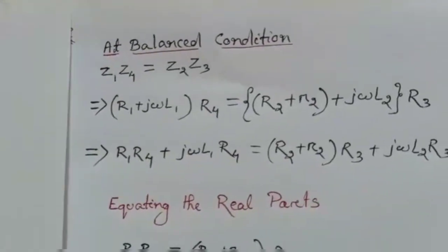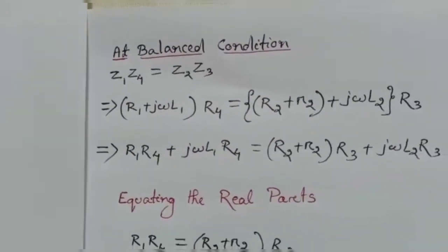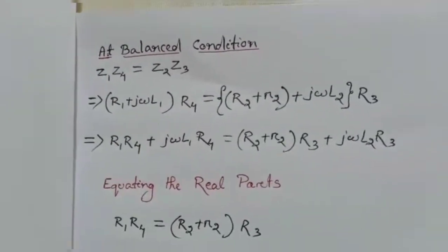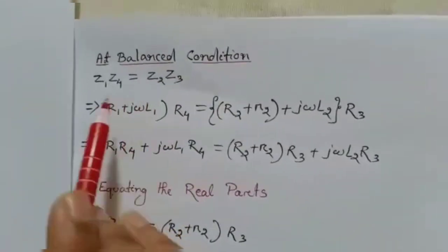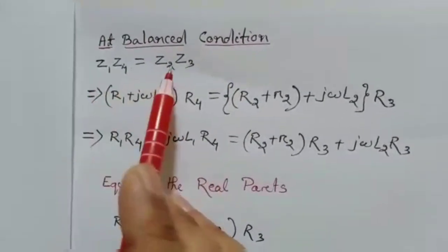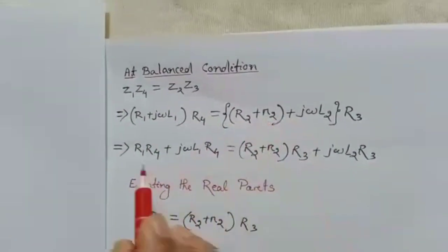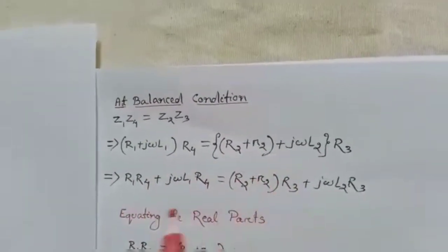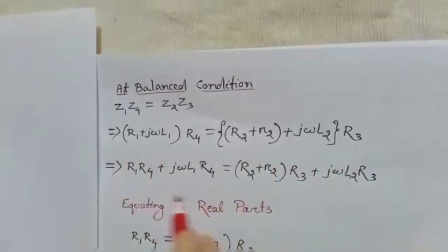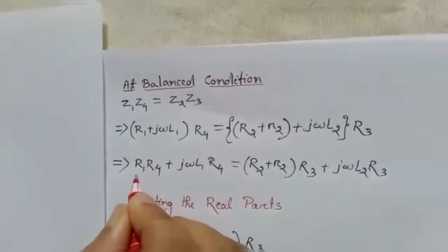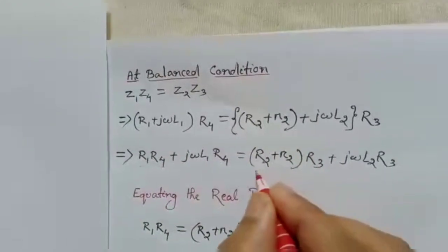To make this bridge balanced, we apply the bridge balance condition: Z1 × Z4 = Z2 × Z3. Putting all the values into this equation gives us the formula, from which we will equate the real parts and the imaginary parts separately.